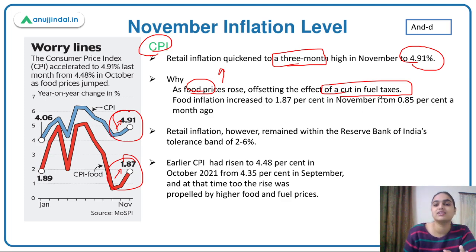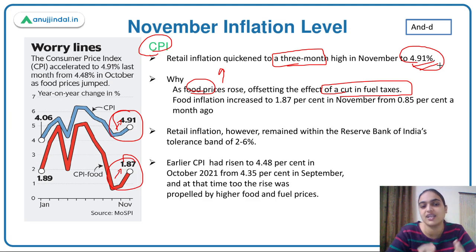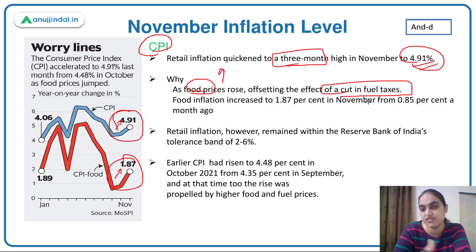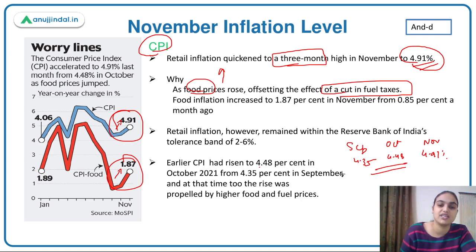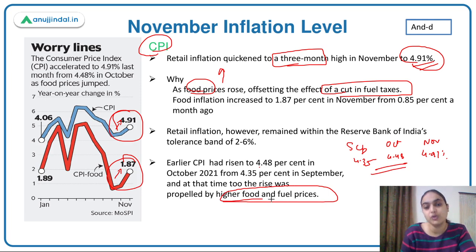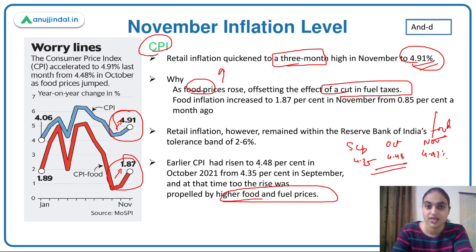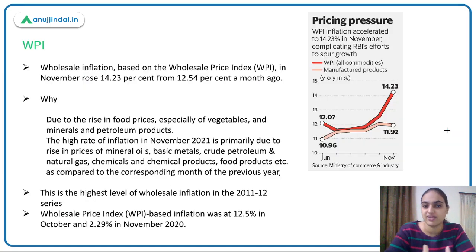Despite this rise, 4.91 percent is within RBI's inflation target tolerance band of 2 to 6 percent. Looking at previous months: CPI was 4.35 percent in September, 4.48 percent in October, and now 4.91 percent in November — a consistent upward trend. Previously, the major factor behind rising inflation was food and fuel prices; this time fuel is not the main reason, but food prices remain a significant driver.